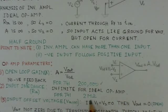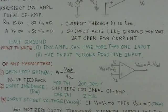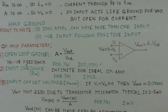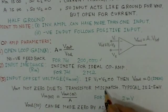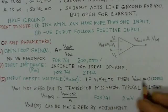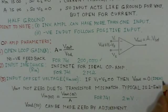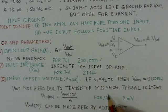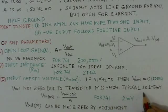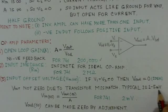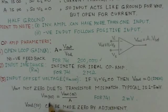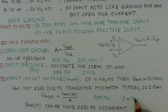Input impedance is infinite for an ideal operational amplifier; the typical value for the 741 is 2 megaohms. Input offset voltage is also an important parameter: if V1 and V2 both equal zero, V_out should be zero, but it is not zero in practice due to transistor mismatches. Typical values of 1 to 5 millivolts are observed, and for the 741 the input offset voltage is typically about 2 millivolts.